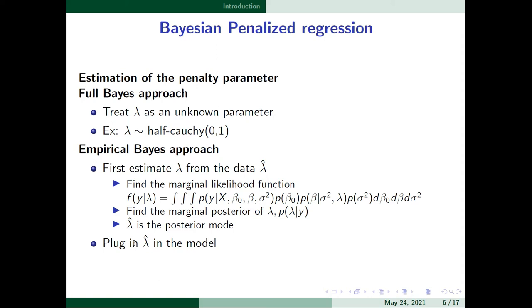There are two approaches to estimate the penalty parameter lambda under Bayesian penalization regression. The first is the full Bayes approach, where lambda is treated as any other unknown parameter. We define a prior distribution for lambda — a popular choice is the half-Cauchy distribution with parameters 0 and 1 — and then use Bayes' theorem to calculate the posterior distribution for lambda.